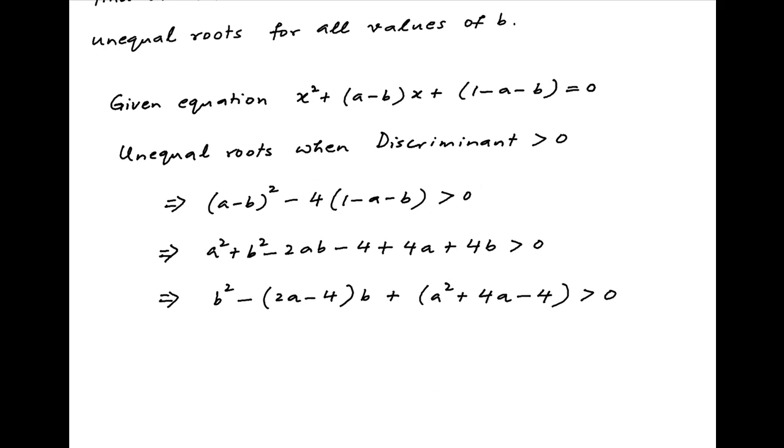The left-hand side is a quadratic in b and it is greater than 0 for all values of b when the discriminant of this quadratic is less than 0.